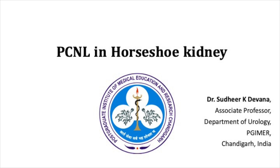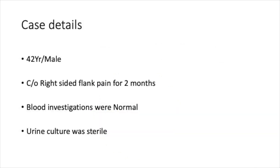In this video we are going to demonstrate a case of percutaneous nephrolithotomy done in a patient with horseshoe kidney. A 42-year-old male presented with right-sided flank pain for two months duration. Routine blood investigations were found to be normal and his urine culture was sterile. He initially underwent an NCCT KUB for evaluation.